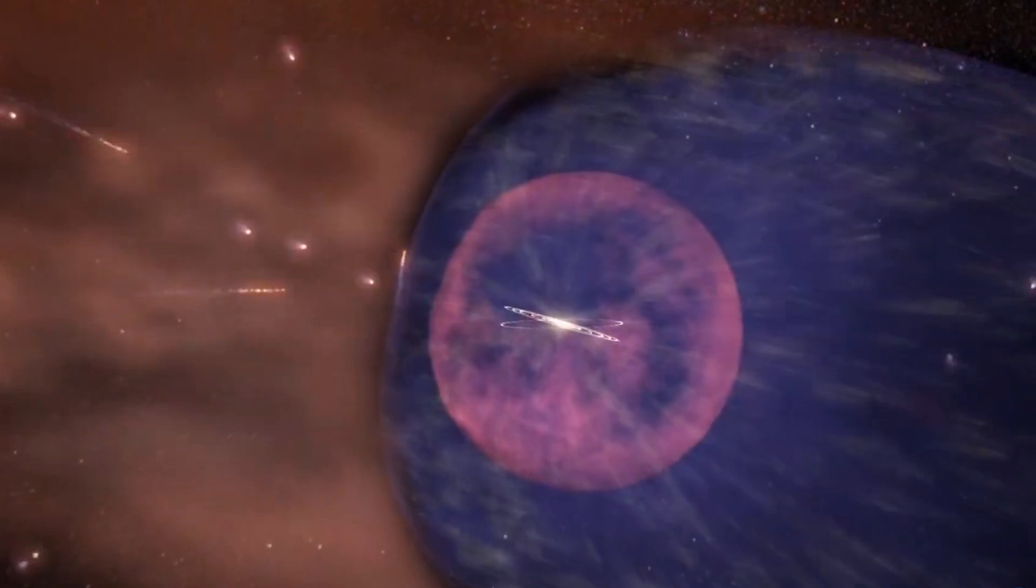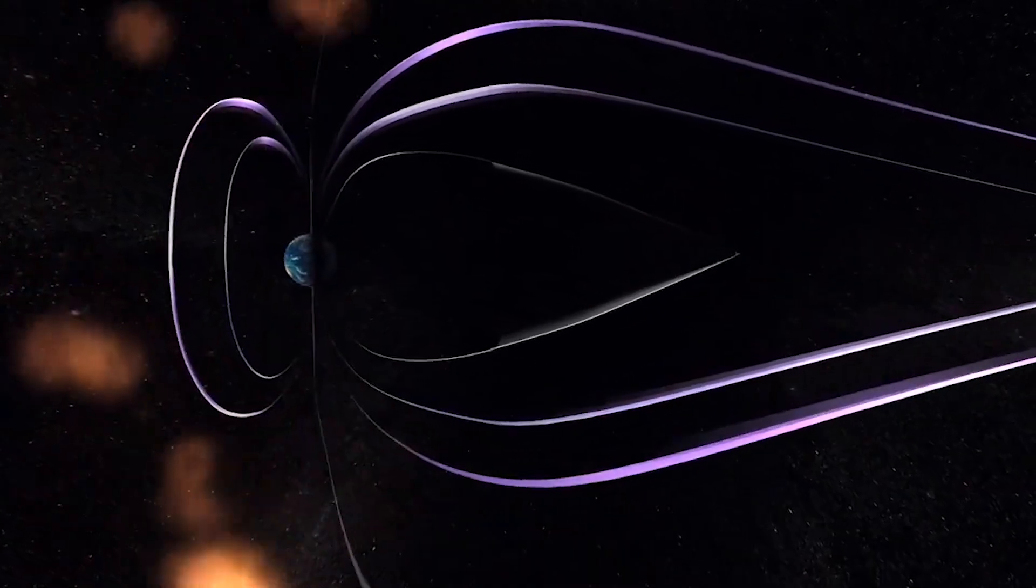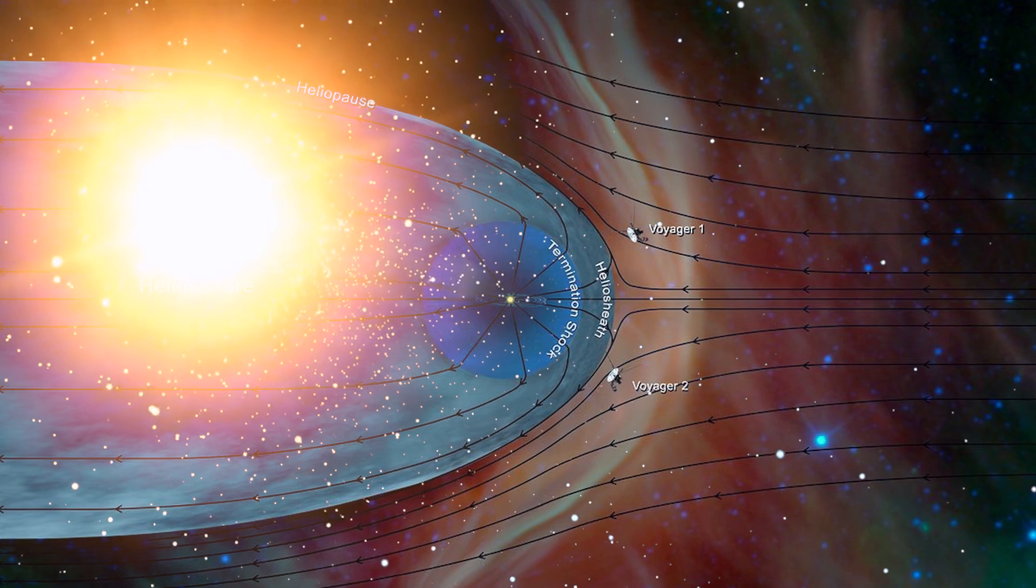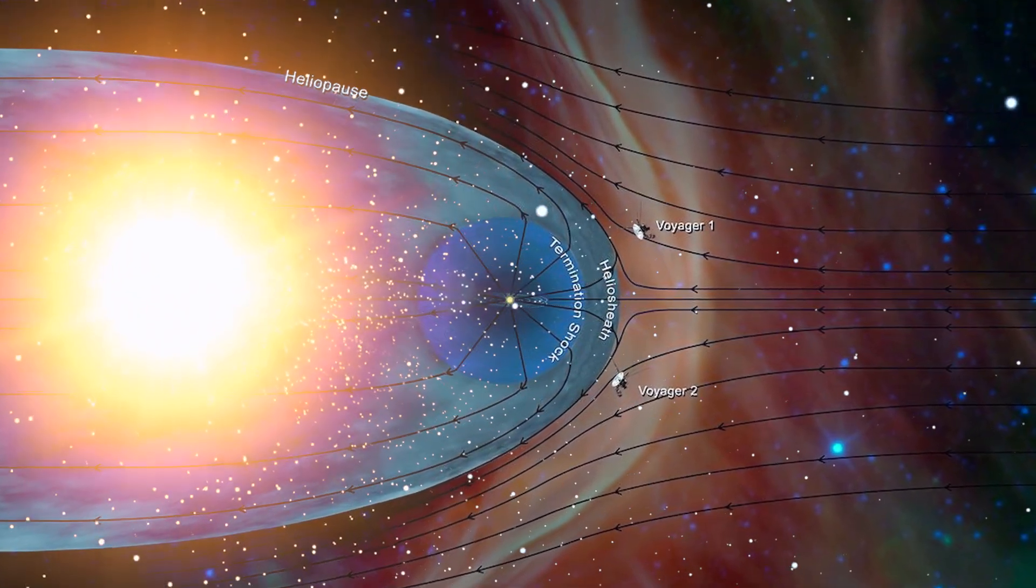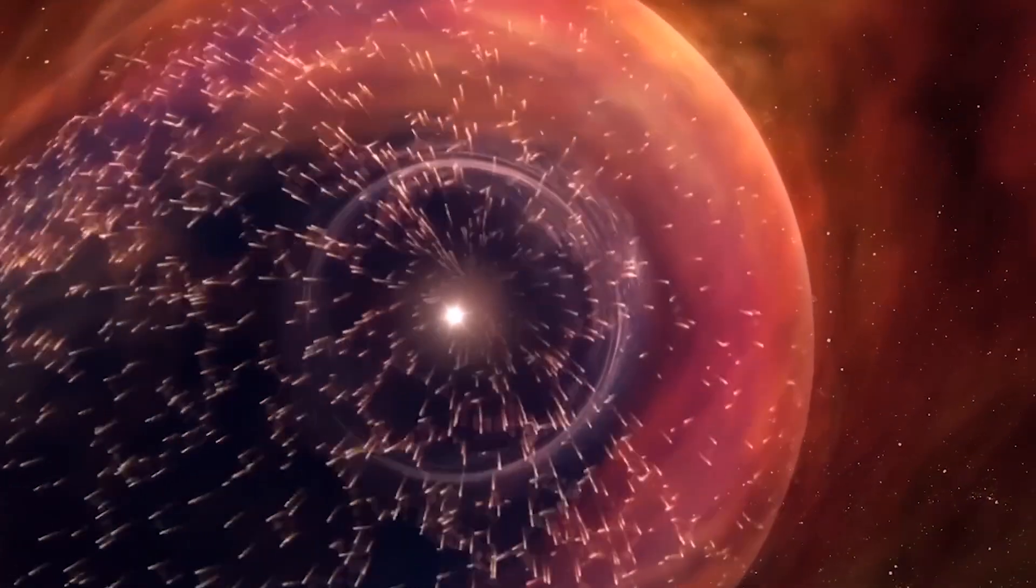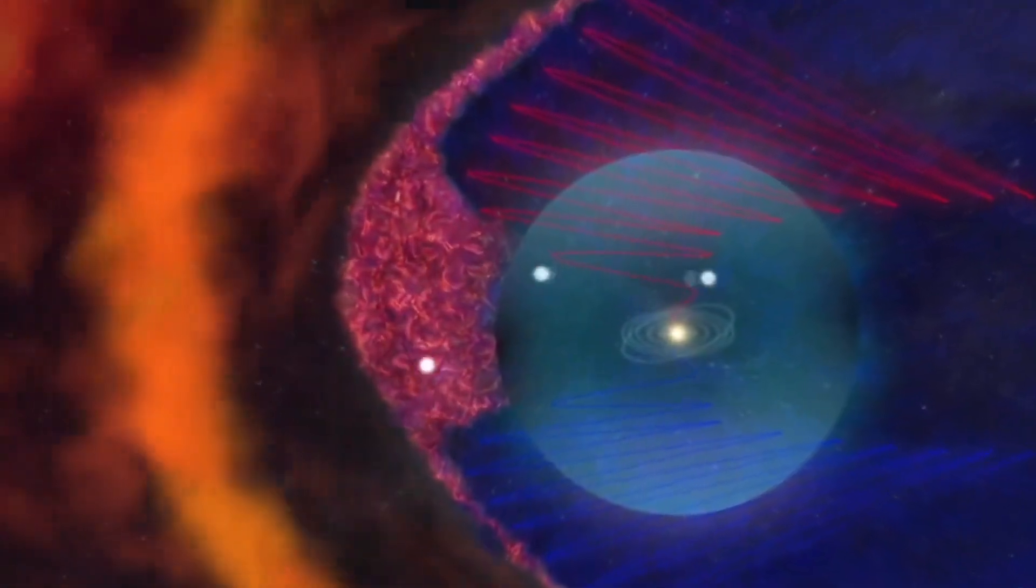Above the ecliptic, the heliosphere's nose faces a stream of interstellar hydrogen drifting from galactic north. There, the bubble's bow shock crumples like the front of a speeding car in rain. Behind us, down in interstellar south, a hundred billion kilometer heliotail fans out like a comet's blue ghost, twisting under the magnetic pressure of the Milky Way.